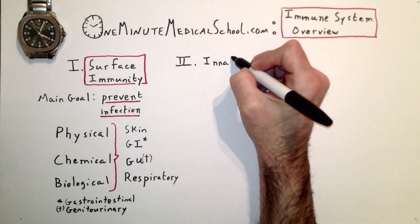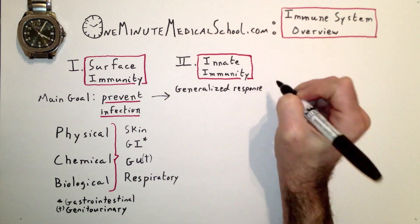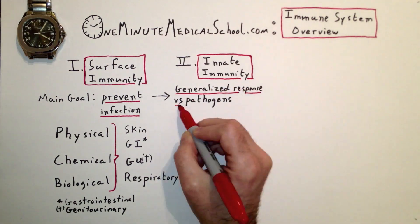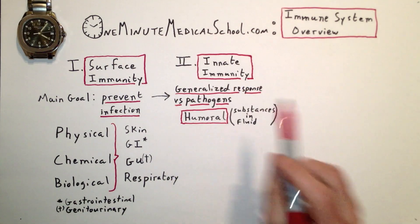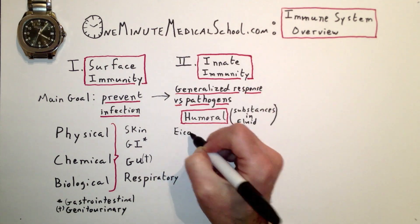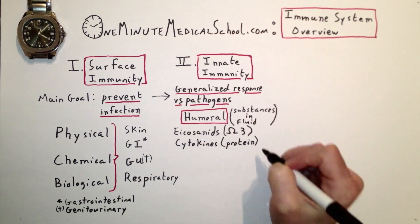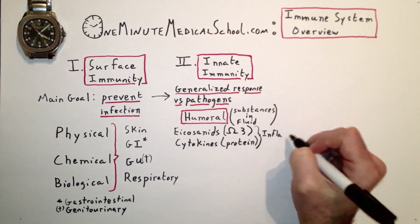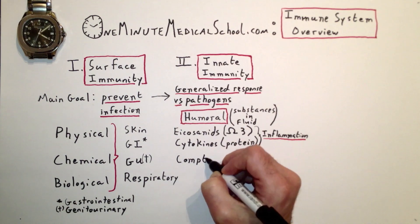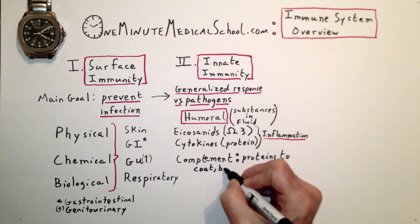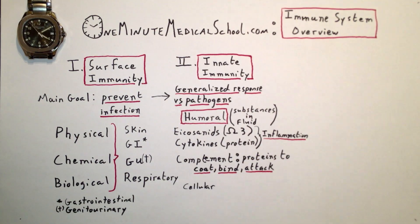Second comes innate immunity, the largest component of your immune system. Its goal is a generalized response versus pathogens. It has humoral components — meaning substances in fluid — eicosanoids and cytokines are involved in regulating inflammation. Complement is a system of proteins that coat, bind, and attack pathogens.